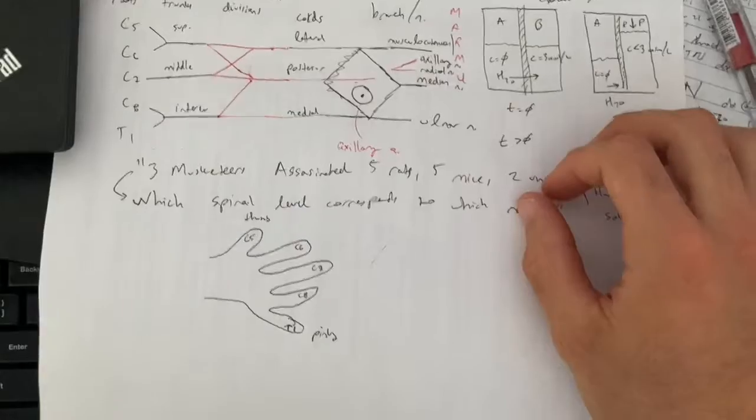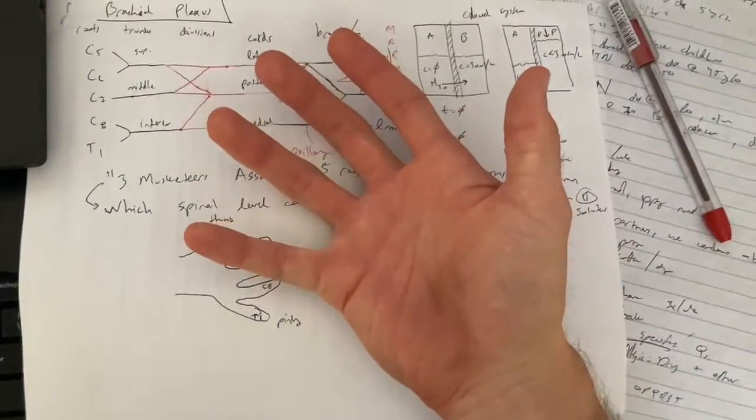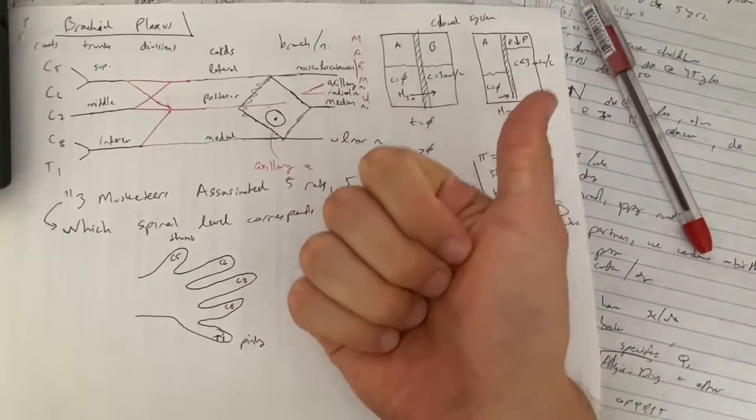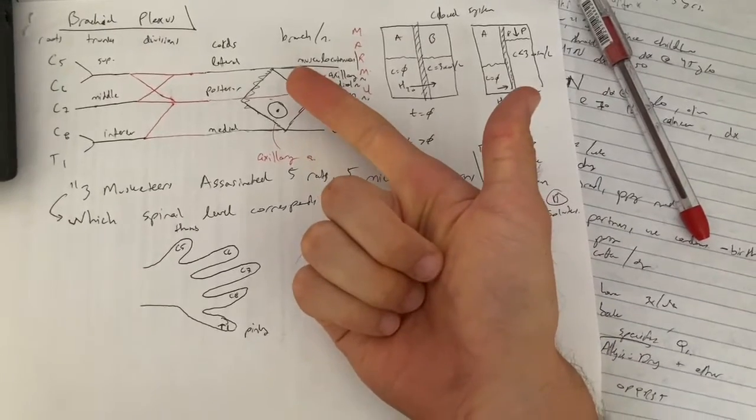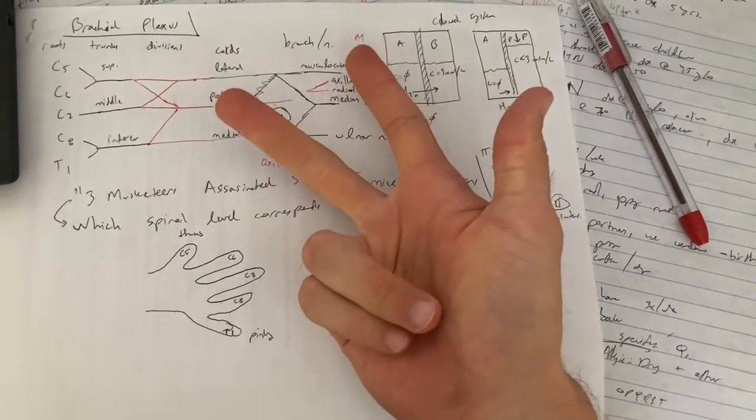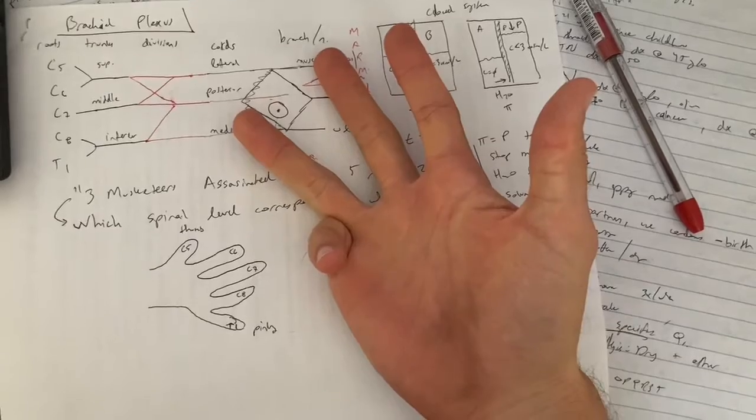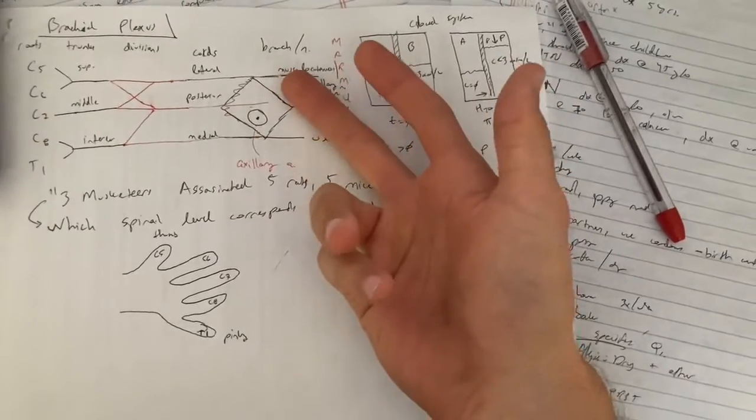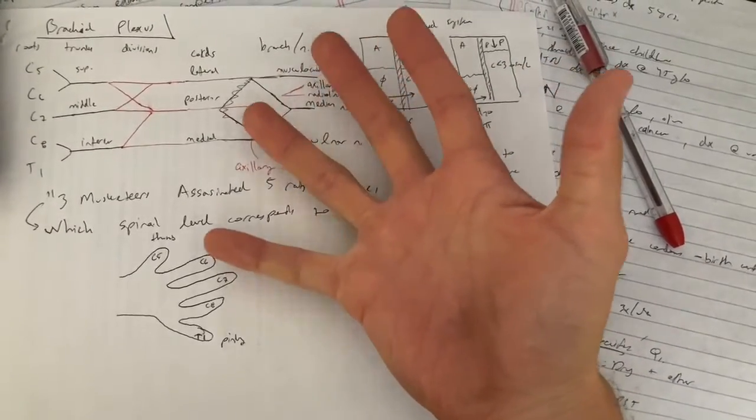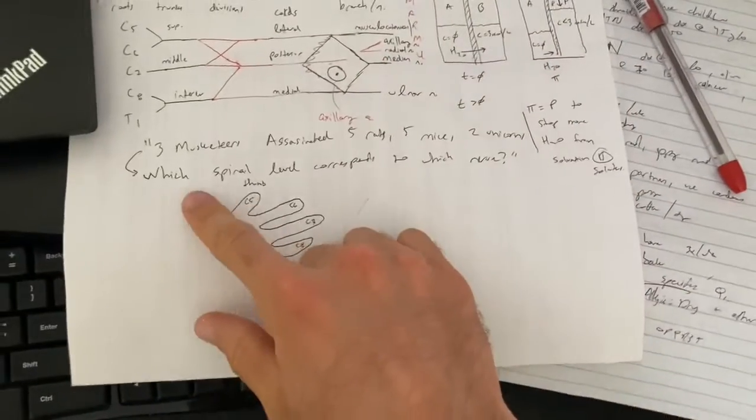The way this works is you basically take your hand, right or left. Your thumb will correspond to C5, index to C6, middle finger to C7, ring finger to C8, and pinky to T1.